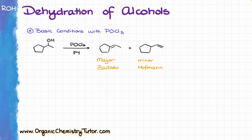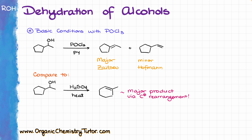If we want to avoid rearrangement, we can use a softer dehydration technique using phosphorus oxychloride — some students call it POCl3 — in pyridine. The important feature of this reaction is it converts the OH group into a good leaving group, and the reaction then proceeds via a typical E2 mechanism, giving the Zaitsev product if possible. Since we are not making any carbocation intermediates, we won't see any carbocation rearrangements. This makes it a good choice for secondary alcohols sitting next to tertiary or quaternary positions that would otherwise be prone to rearrangement.